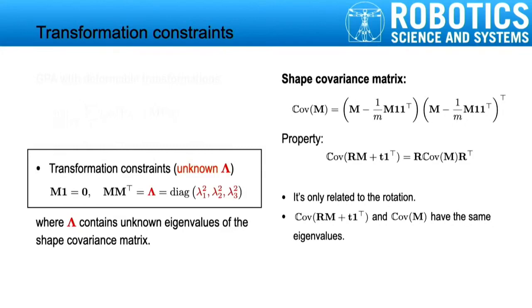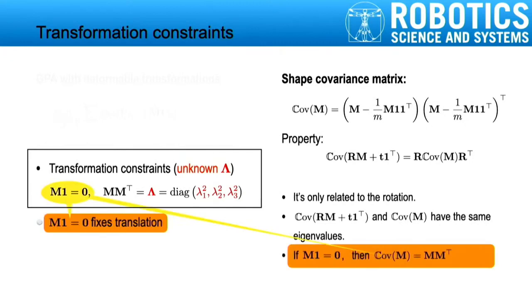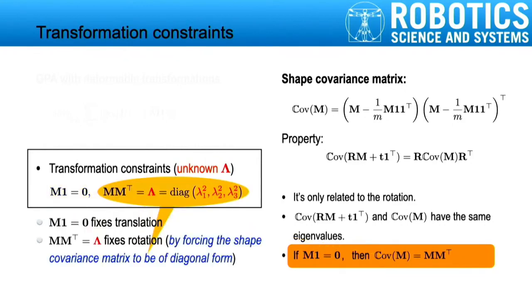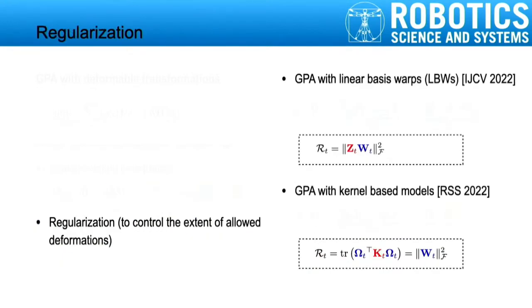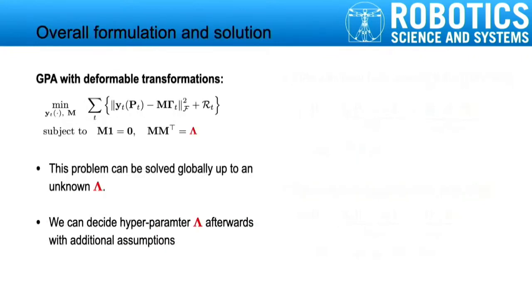Here are the transformation constraints we use, where LBW contains the unknown eigenvalues of the shape covariance matrix. The first constraint fixes translation and restricts the shape covariance matrix to MM transpose. The second constraint fixes rotation because it forces the shape covariance matrix to be of diagonal form. We also use regularizations to control the extent of allowed deformations.